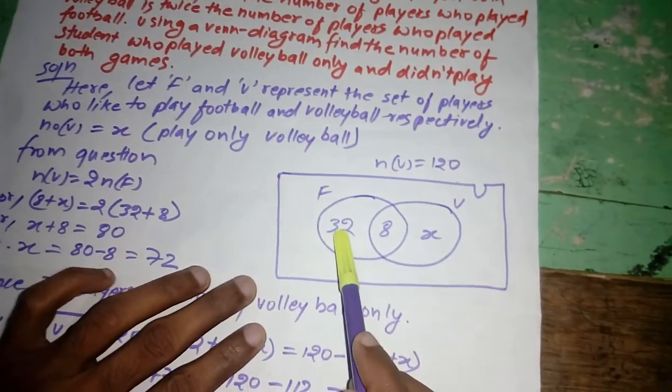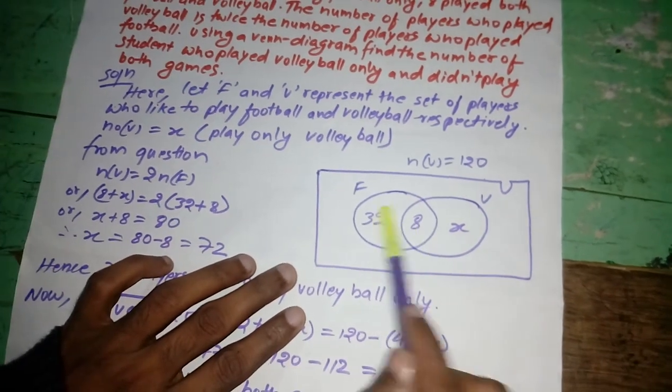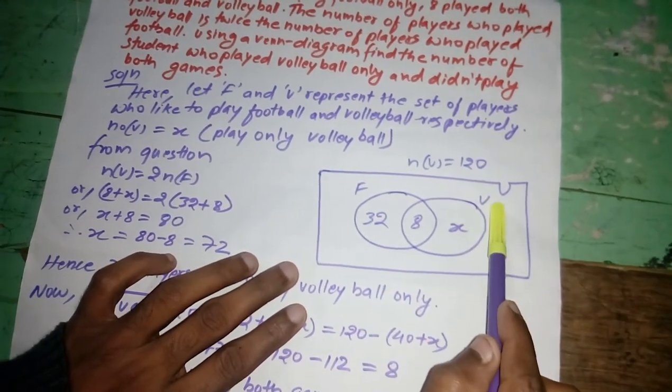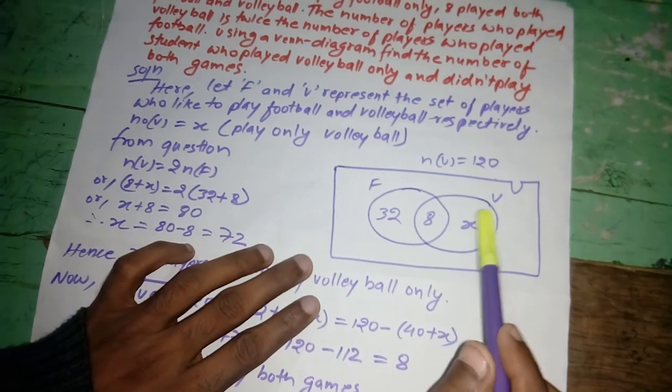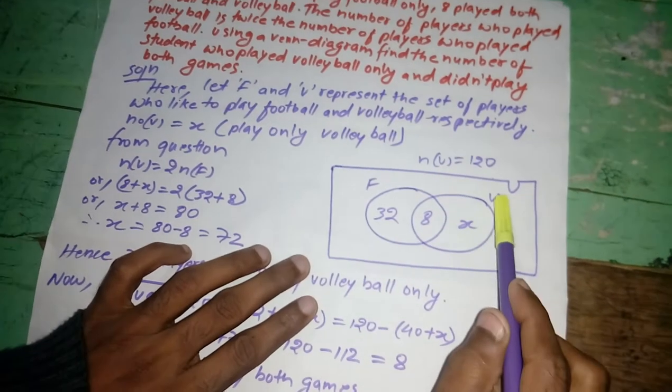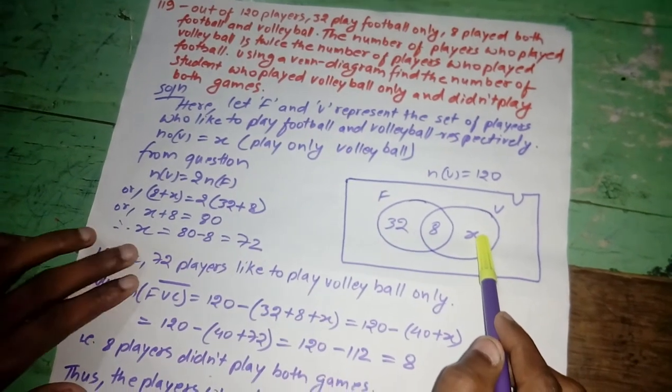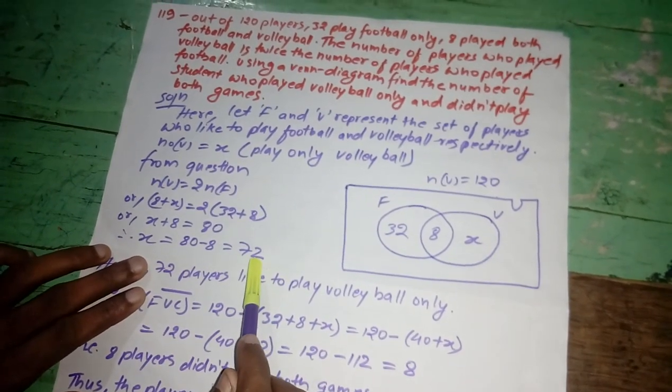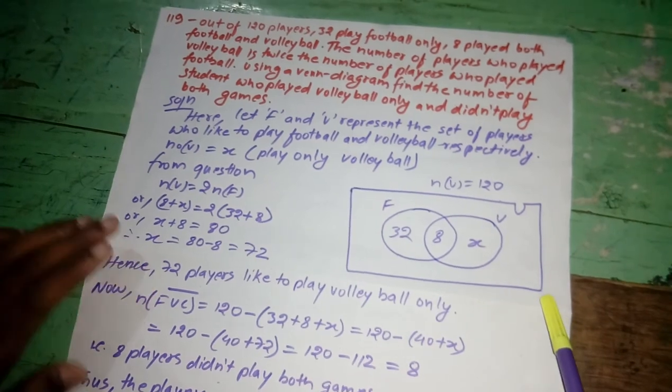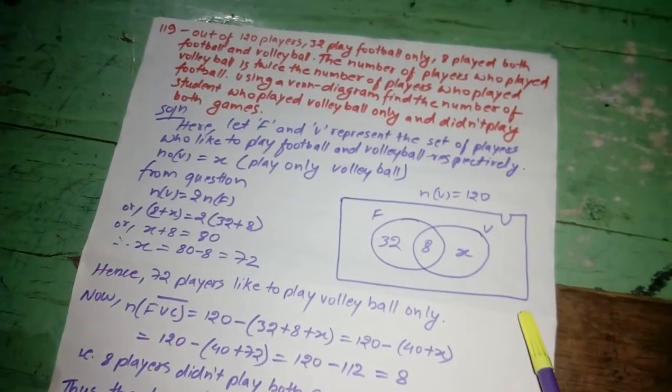Here, only F is equal to 32. Intersection of both volleyball and football is 8. Similarly, X is only volleyball. And this is what we have to find. We got X from here. This is 72. Okay. This is completion. Thanks.